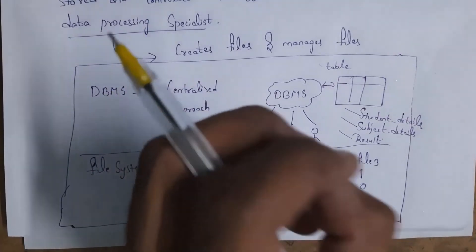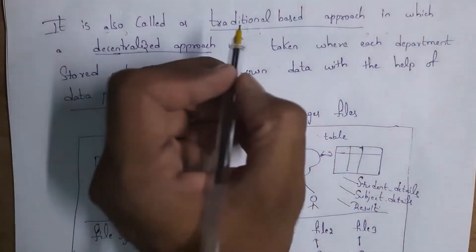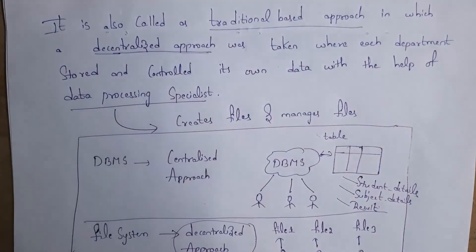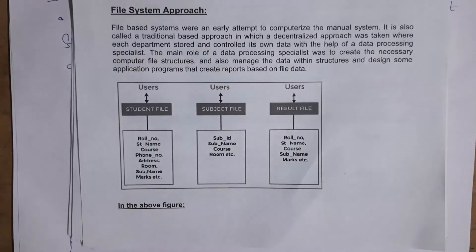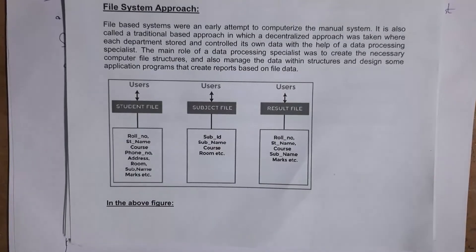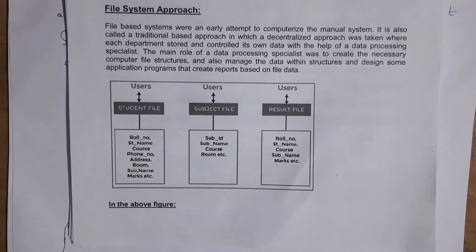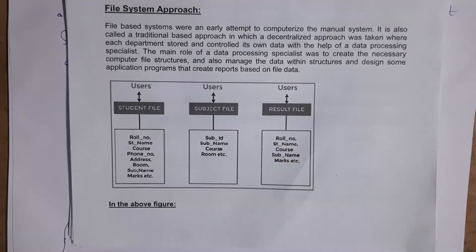In decentralized approach, each department stored and controlled its own data with the help of a data processing specialist. The role of the data processing specialist is to create and manage files. For example, to show student information like student name, roll number, section, and marks, we need to create a separate student file. Similarly, for subject details like subject name, subject ID, and subject room, we create a separate subject file. For student results containing student name, roll number, subject name, and marks, we create a separate result file.